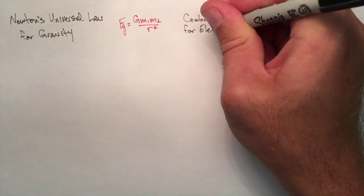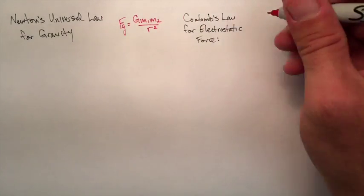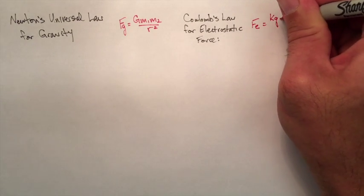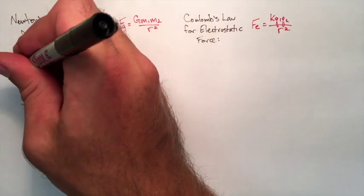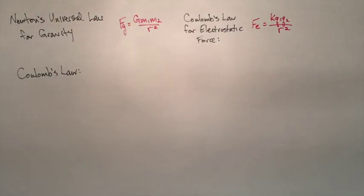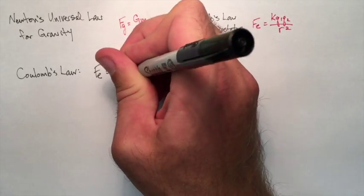Coulomb's law is the name we give to the electric force whenever we feel a repulsion between two particles or an attraction between two particles. This is K multiplied by the two charges on the particles divided by their separation squared. So very similar to Newton's gravitational law.